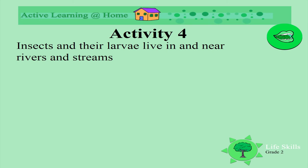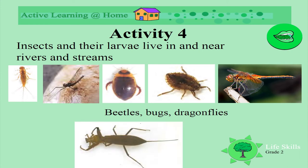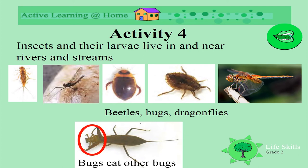We also find insects and their larvae that live in and near rivers and streams — all sorts of different beetles, bugs, and dragonflies. Look how different they all are! Sometimes the water insects eat other bugs. Can you see this bug eating the other bug?